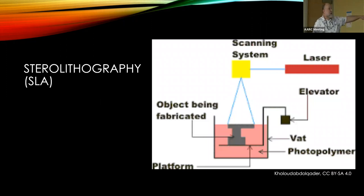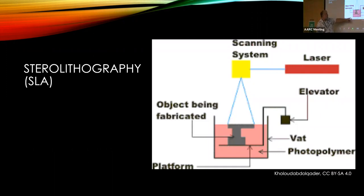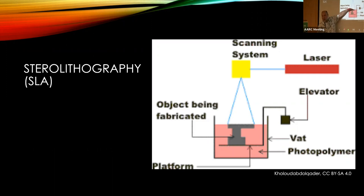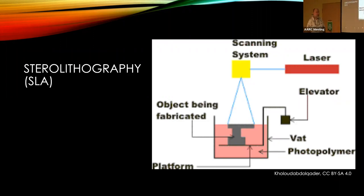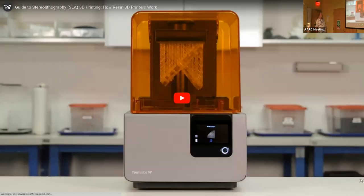With stereolithography, you've got a vat full of polymer and some sort of light source, typically a laser. In this diagram it's going down — the print bed starts at the top of the vat, the laser scans each layer, and the bed moves down. Then the laser scans the next layer. Most modern machines go the other way but it's the same idea.